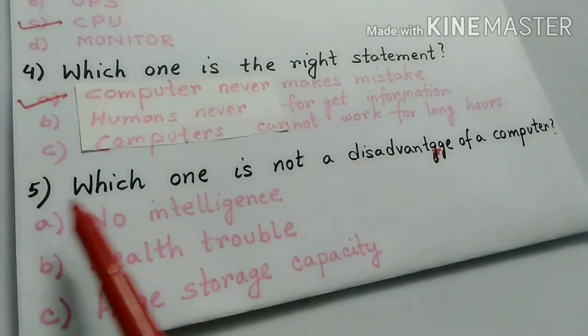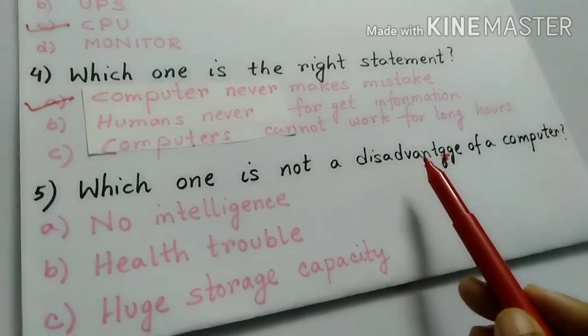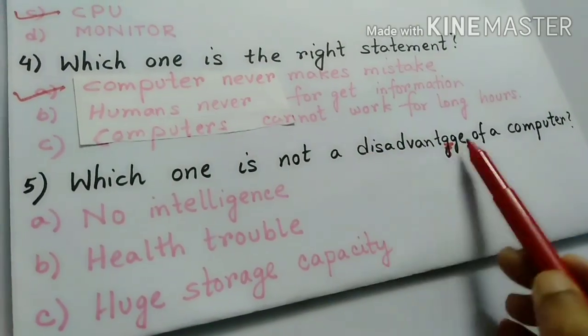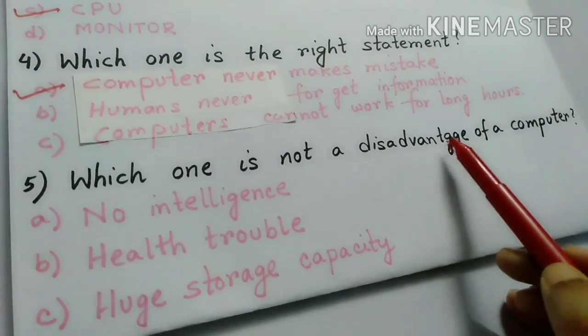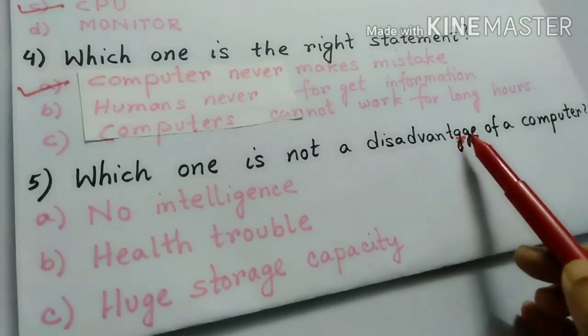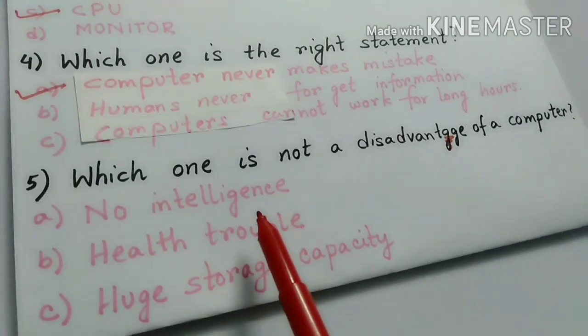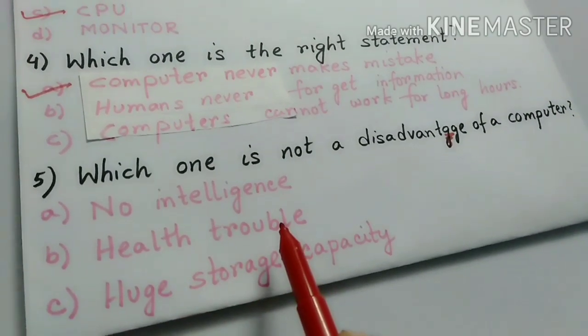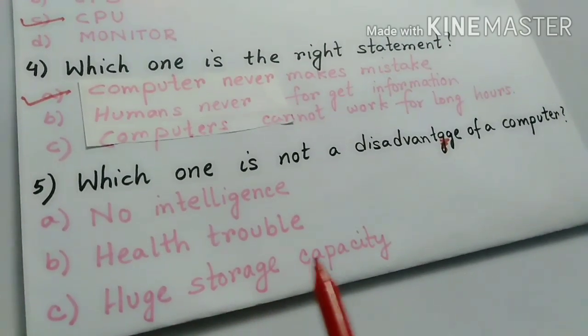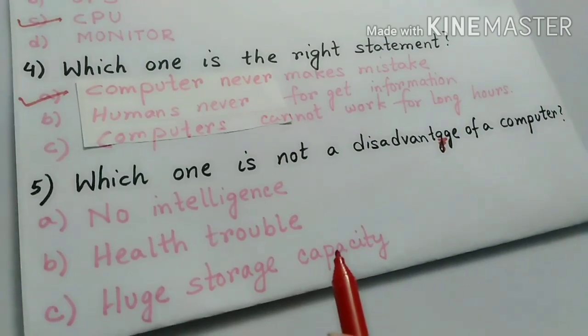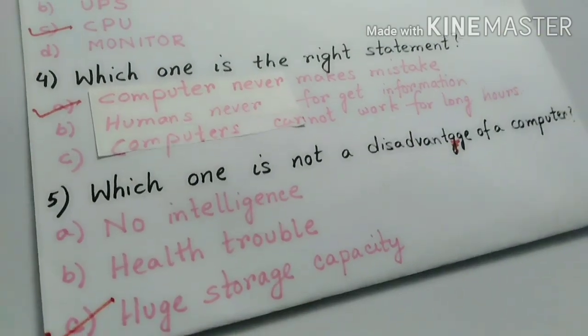Number 5. Which one is not a disadvantage of a computer? Now here, let me spell it out. D-I-S-A-D-V-A-N-T-A-G-E. Disadvantage of a computer. Now see, no intelligence. This is a disadvantage of a computer. Health trouble. This is also a disadvantage of a computer. But huge storage capacity. This is not the disadvantage. This is advantage of a computer. So, this is the right answer. Okay.